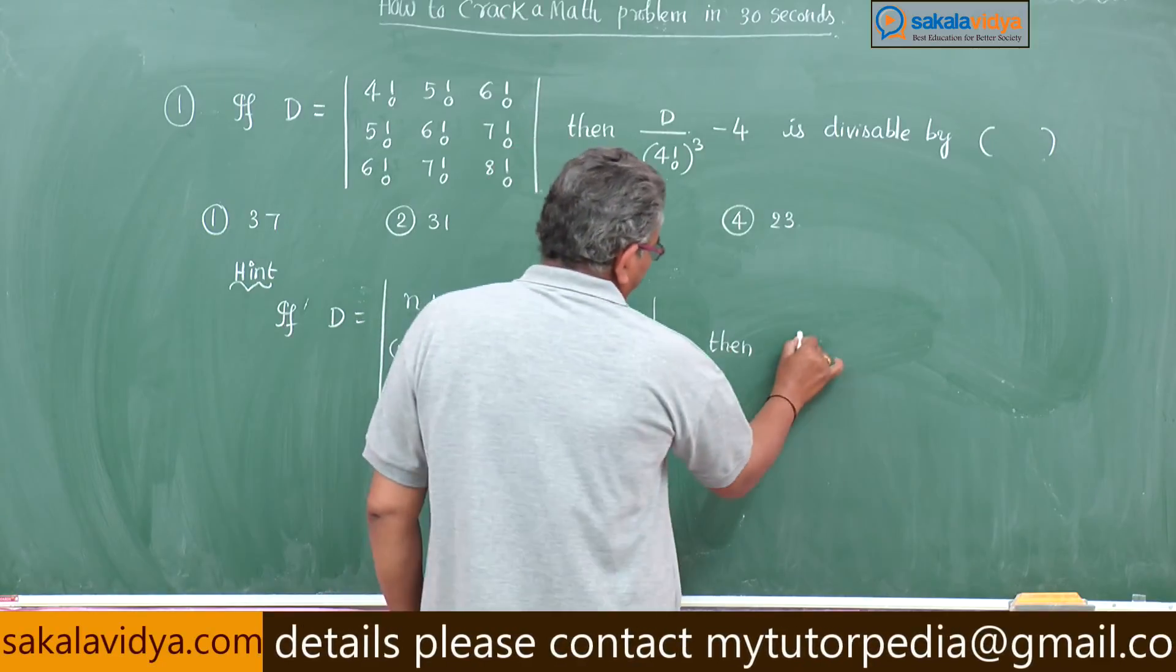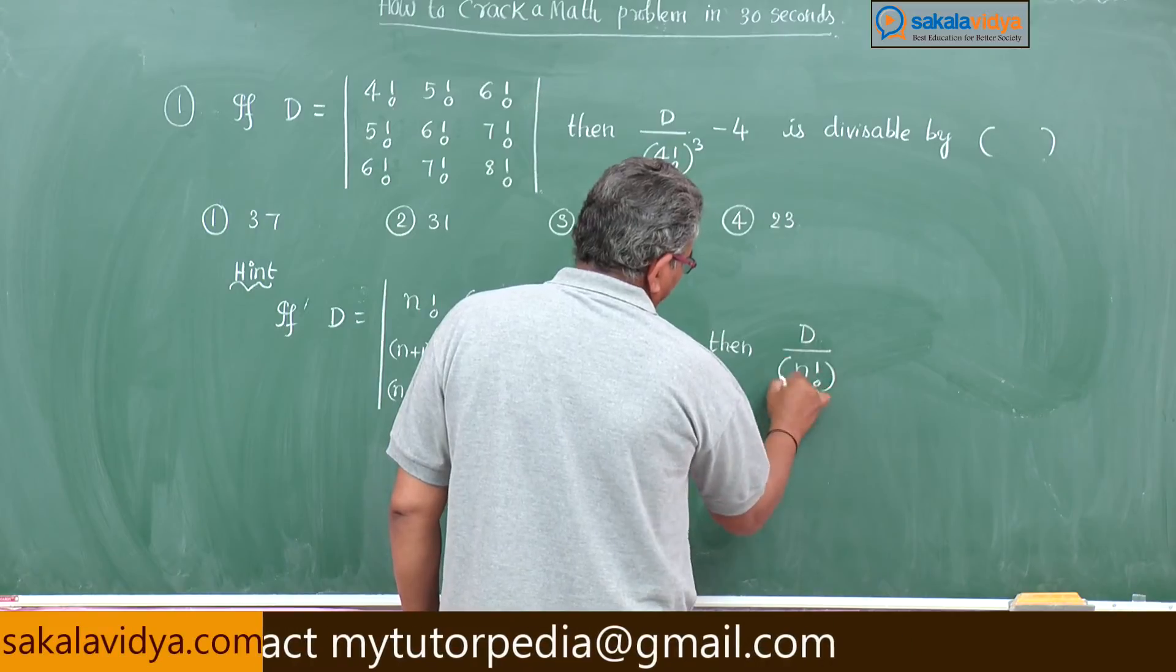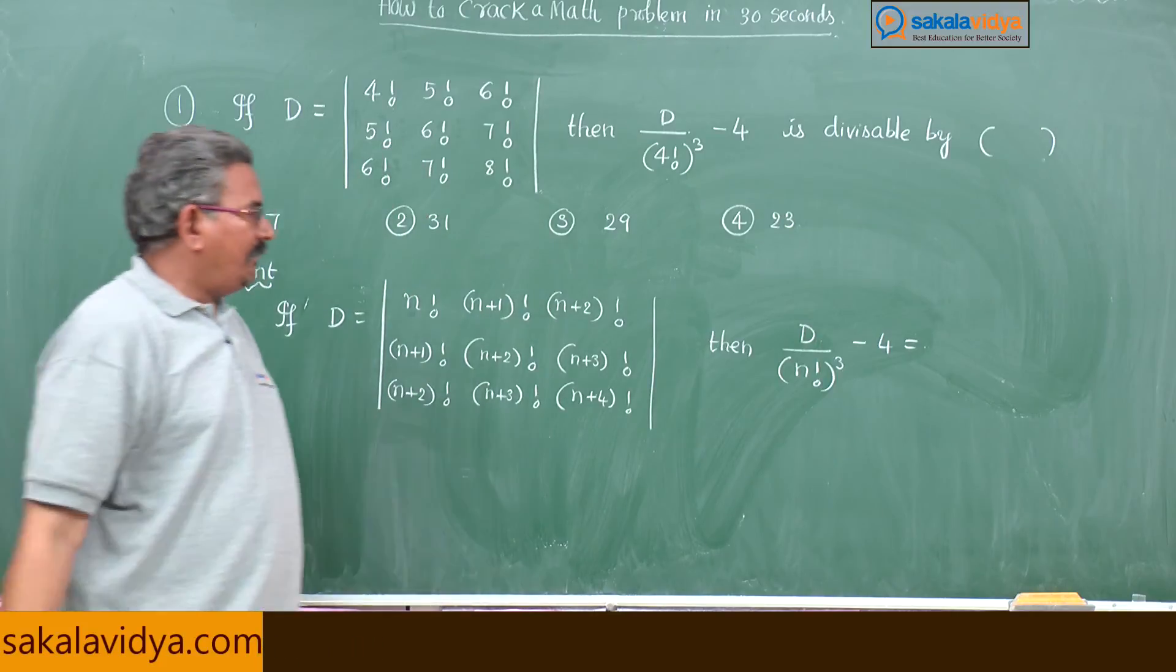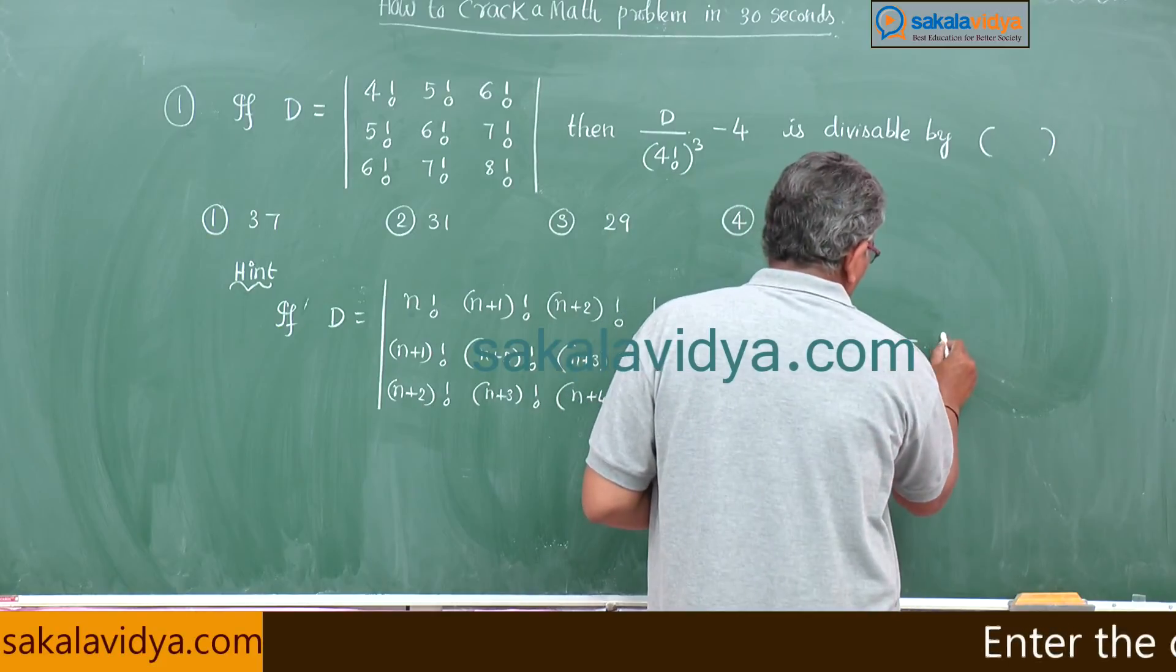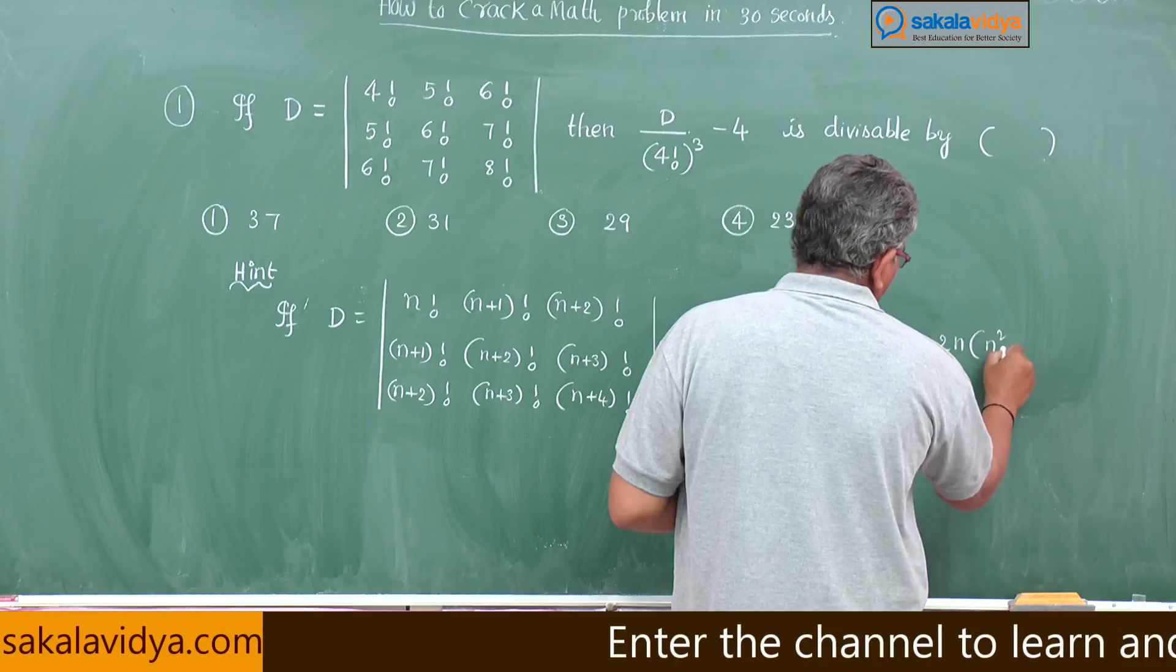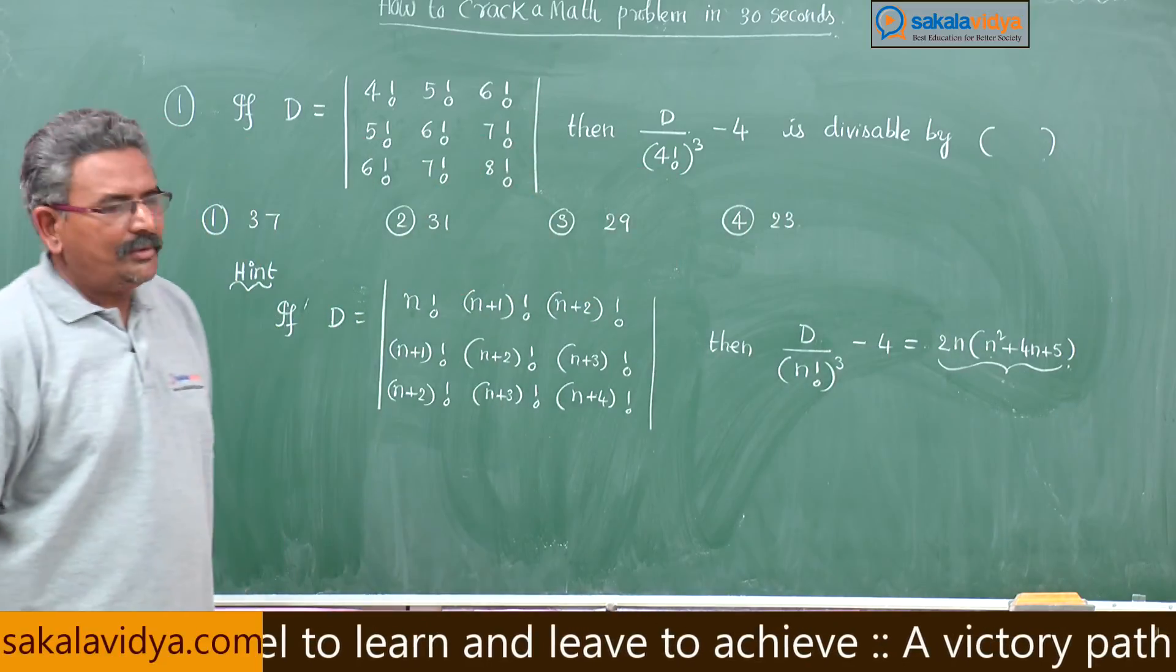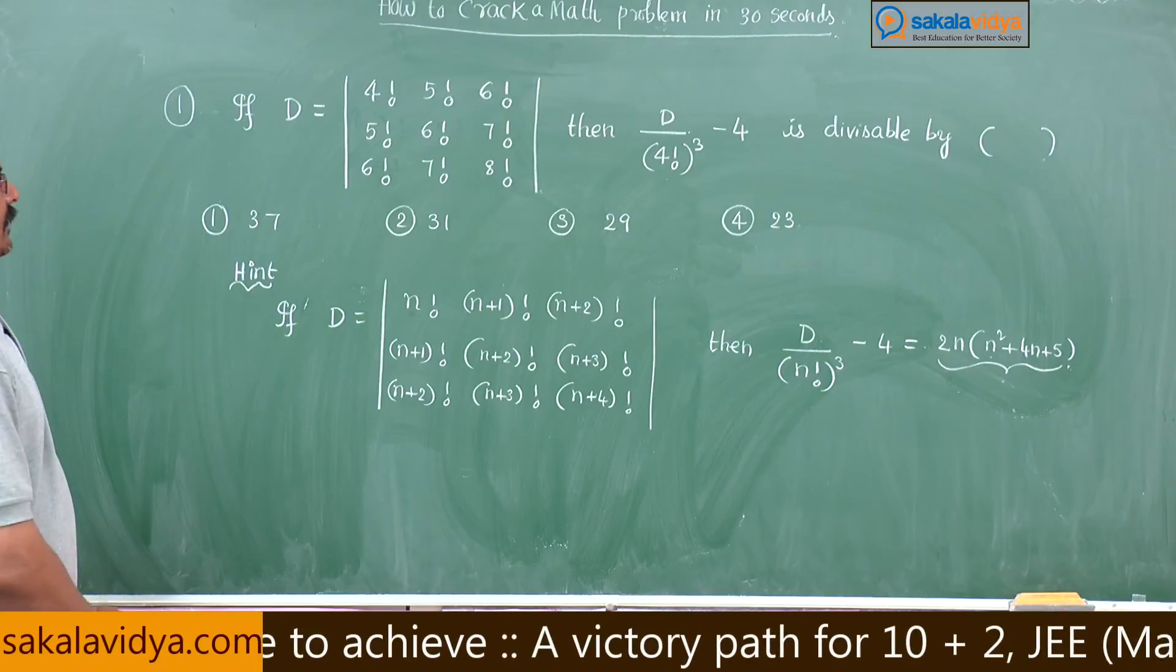Now, then this D divided by N factorial cubed minus 4 is equal to, this value we have to find out. That value is given by here 2N into N square plus 4N plus 5.